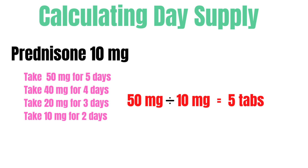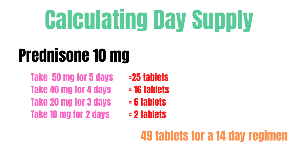Step by step: divide each dose by the tablet strength of 10 mg. For 50 mg ÷ 10 mg = 5 tablets per day for 5 days = 25 tablets. For 40 mg ÷ 10 mg = 4 tablets per day for 4 days = 16 tablets. For 20 mg ÷ 10 mg = 2 tablets per day for 3 days = 6 tablets. For 10 mg ÷ 10 mg = 1 tablet per day for 2 days = 2 tablets. Adding them all together: 25 + 16 + 6 + 2 = 49 tablets for a 14-day regimen.